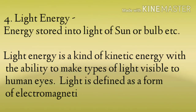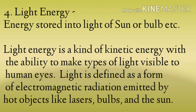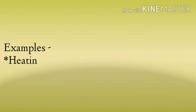Next है light energy. Light energy कब होती है? Energy stored in light of the sun and bulb etc. — जब energy पहले से store होती है sun की light में, bulb में, tube light में — तो वो light energy होती है. Light energy is a kind of kinetic energy with the ability to make types of light visible to the human eye. Light is defined as a form of electromagnetic radiation emitted by hot objects like lasers, bulbs, and the sun.